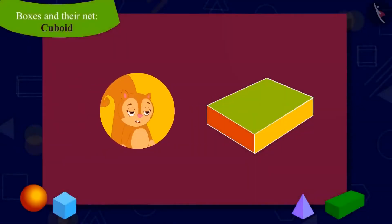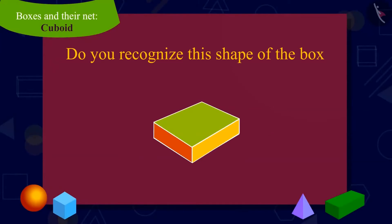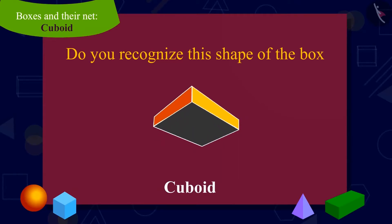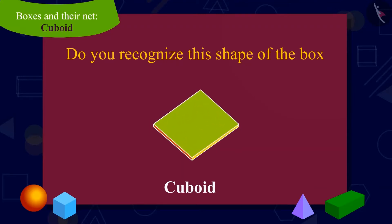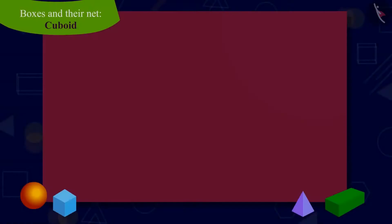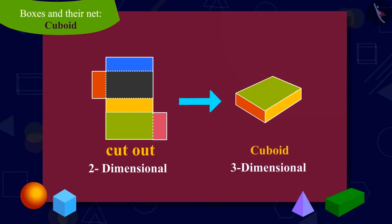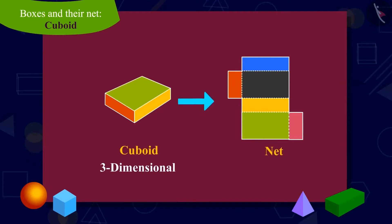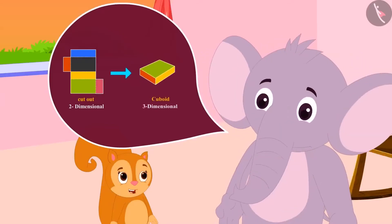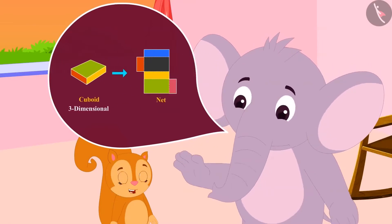Children, were you also shocked like Chanda? Do you recognize this shape of the box? It is a cuboid. Every face of a cuboid is rectangular. Do you know that two-dimensional shapes, like the cutouts of this cardboard, which when folded, we make three-dimensional shapes like the cuboid? This is called the net of the shape.